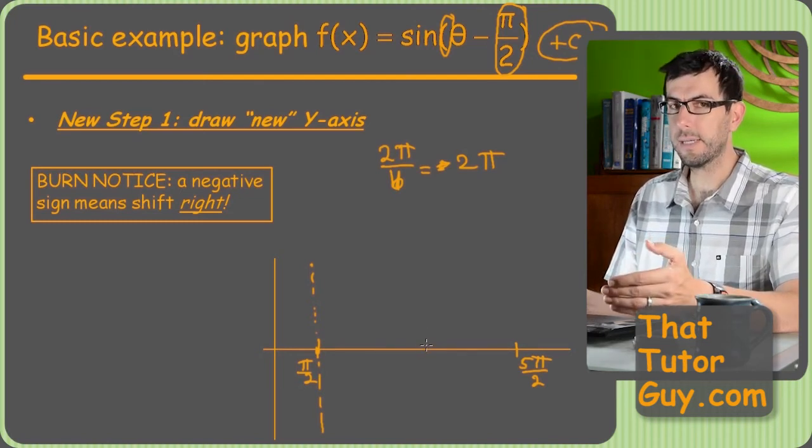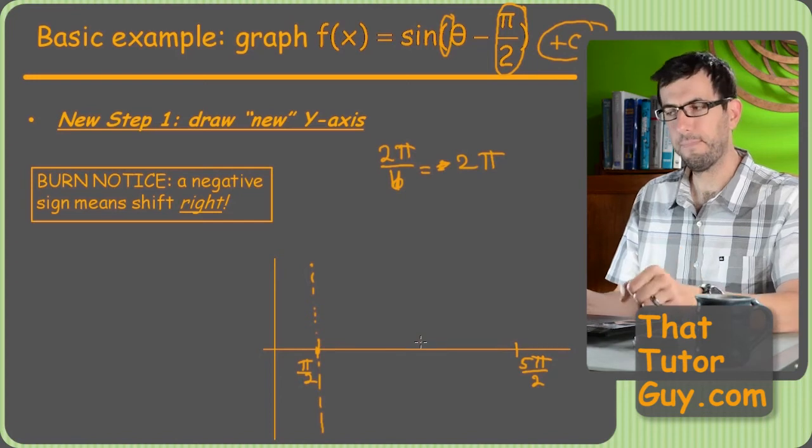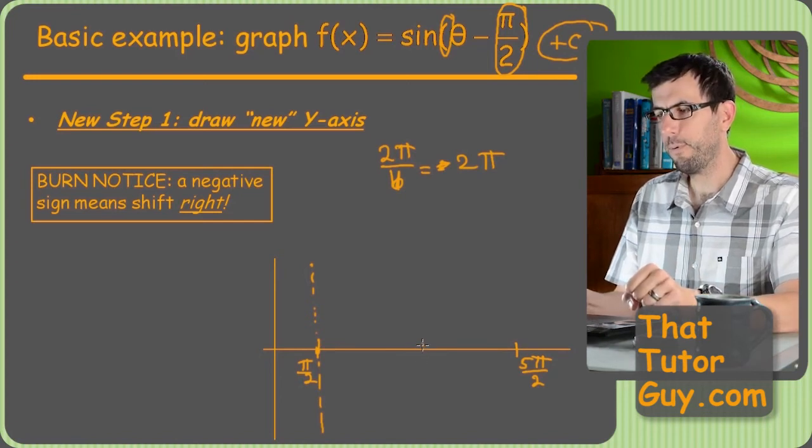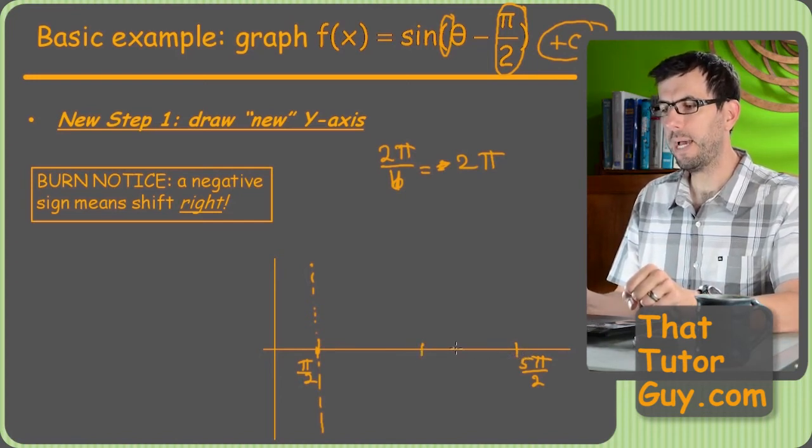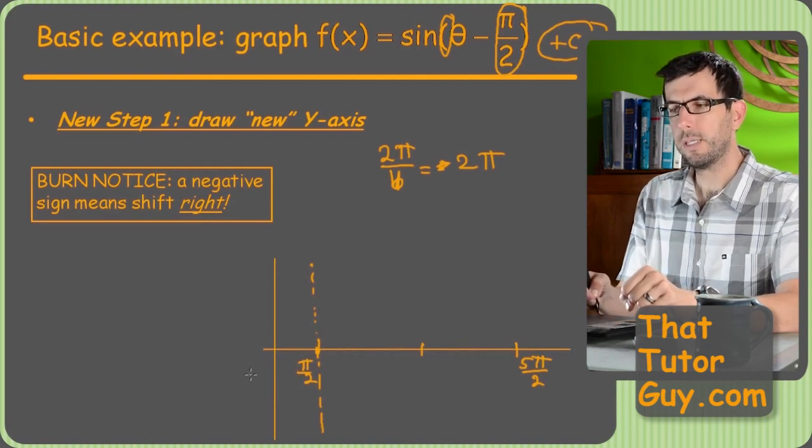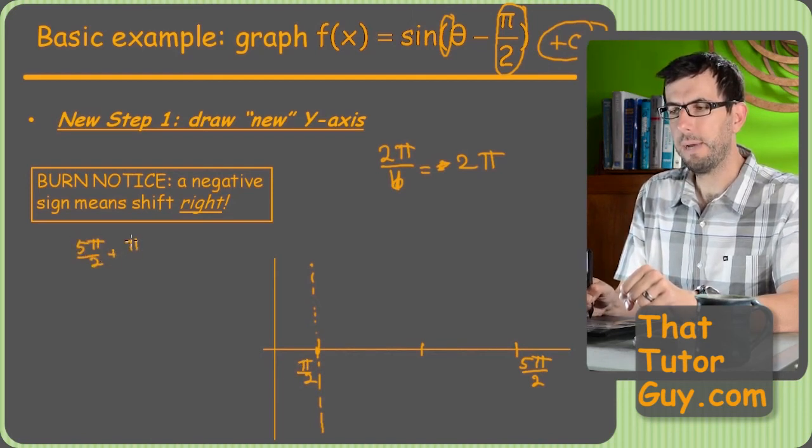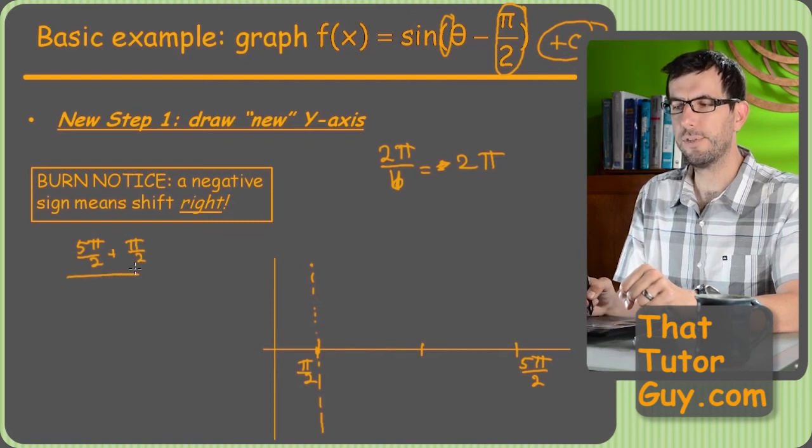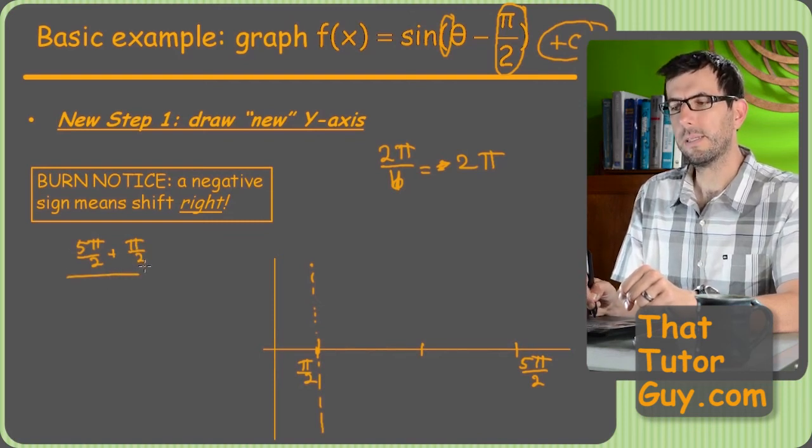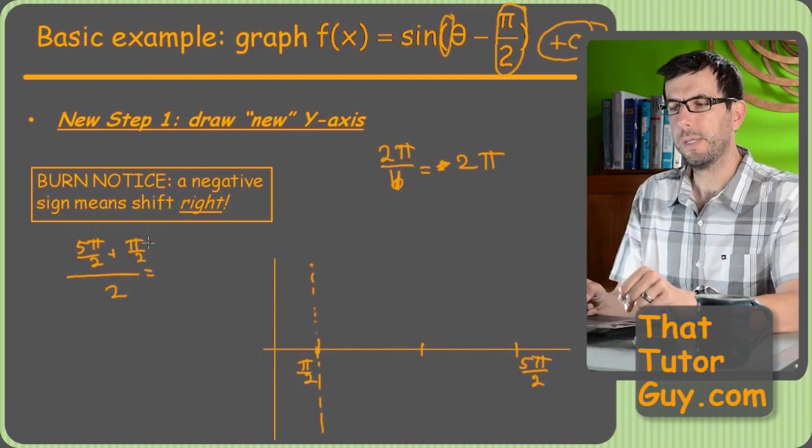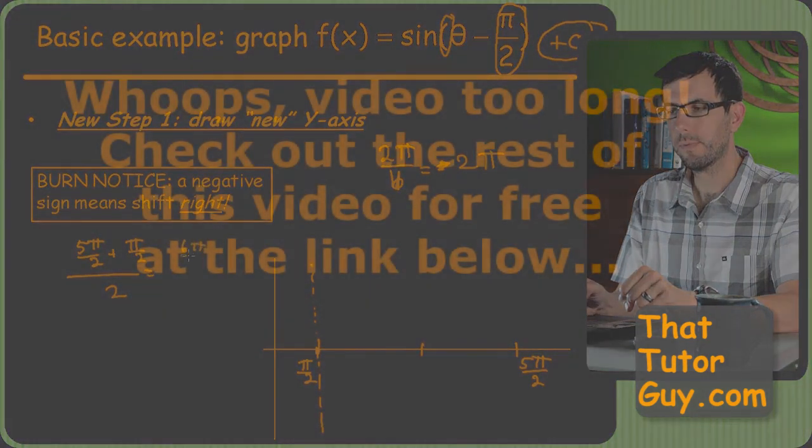Now it gets uglier still because now we have to divide things into fourths, right? So I need to find a point that's halfway between 5 pi over 2 and pi over 2. So how do I find that? I just add them together and I divide by 2. It's kind of like taking the average of the 2 x coordinates. So that's and divide by 2. So that's going to be 6 pi over 2.